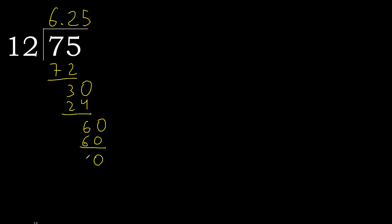Subtract 0 — therefore finished. 75 divided by 12 is here: 6.25.